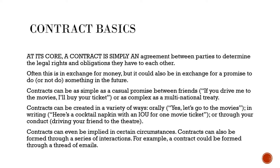At its core, a contract is simply an agreement between parties to determine the legal rights and obligations they have to each other. Often this is in exchange for money, but it could also be in exchange for a promise to do, or not do, something in the future. Contracts can be as simple as a casual promise between friends — if you drive me to the movies, I'll buy your ticket — or as complex as a multinational treaty.